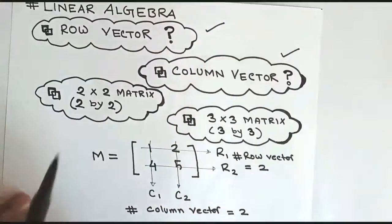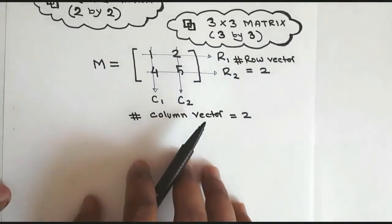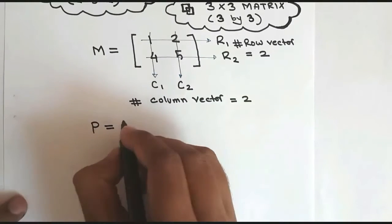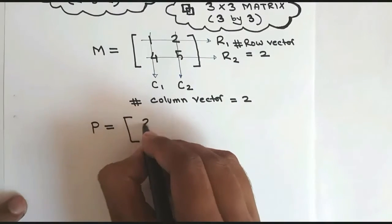So we have completed the row vector and the column vector here. Now for 2 by 2 matrix, yes, now I'll be showing you 2 by 2 matrix.